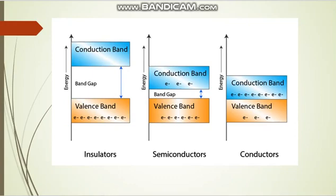In a semiconductor, a few electrons are available in the conduction band. In a conductor, because of overlapping of valence band and conduction band, more electrons are available in the conduction band, so conduction is much easier and resistivity is very less. Insulators have no electrons in the conduction band and have higher resistivity. Semiconductors have moderate resistivity values.